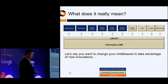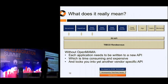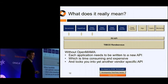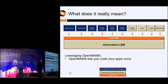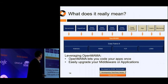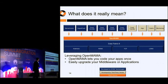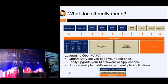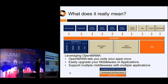What does this really mean practically? Typically you'd have one middleware bus — for example, using Informatica LBM, which they've written to their API. But if you decide you want to change to, say, Tibco Rendezvous, you'd have to go into all those applications and literally rewrite them to the RV API, then recode, recompile, retest — a lot of work and a lot of risk. If you use OpenMAMA instead, you write all your apps once to OpenMAMA, and now you can swap out the middleware without changing anything above it. We have our own middleware called Data Fabric 6, with an RDMA and verb-level implementation, which I can swap in without changing any upstream applications.